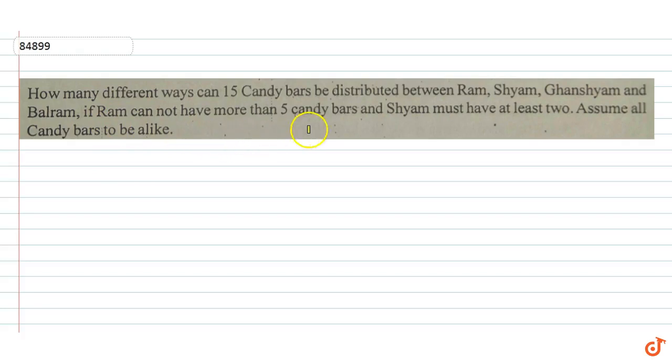How many different ways can 15 candy bars be distributed between Ram, Shyam, Ghan Shyam and Balram? I represent all of them: Ram is R, Shyam is S, Ghan Shyam is G, and Balram is B. If Ram cannot have more than 5 candy bars and Shyam must have at least 2.